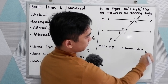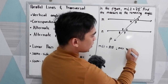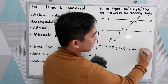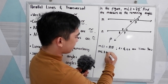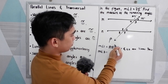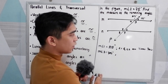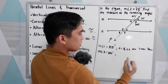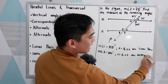Angle 1 and angle 2 are linear pairs. Next, measure of angle 3. If angle 1 is 105 and angle 2 is 75 degrees, measure of angle 3 is also 105 degrees. Why? Vertical angles are congruent. Angle 1 and angle 3 are vertical angles.